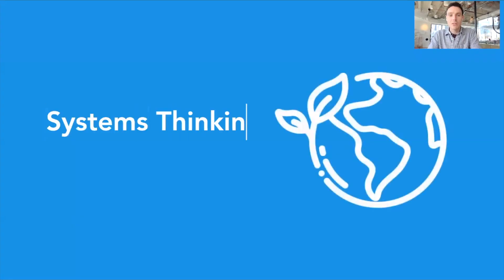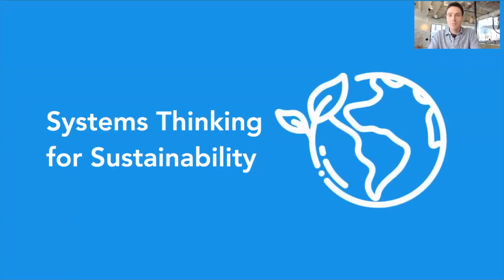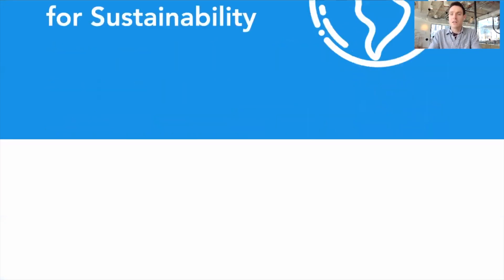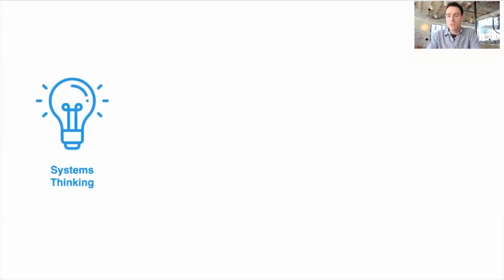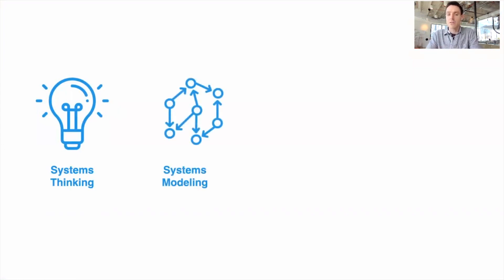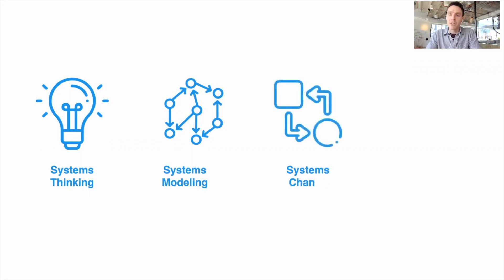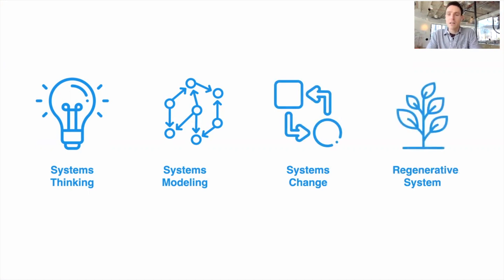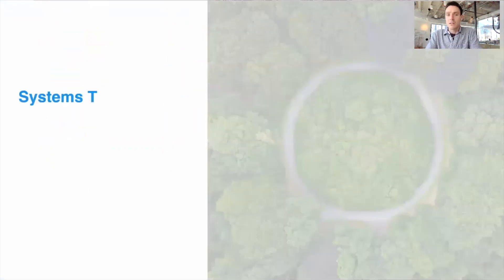Welcome everyone to this course on systems thinking for sustainability, where we'll be taking the ideas, the methods, the tools of systems thinking, systems change, and thinking about how to apply those in the context of the sustainability challenges we face. The course is broken down into four main sections: systems thinking, systems mapping and systems modeling, systems change, and finally regenerative systems and living systems.